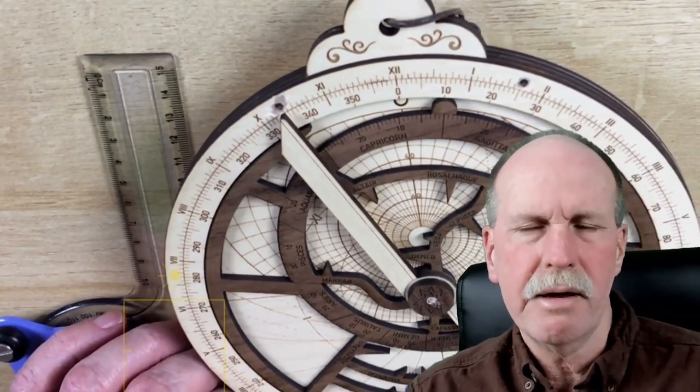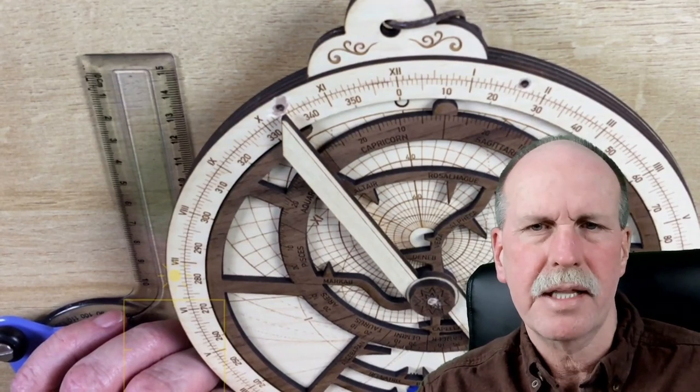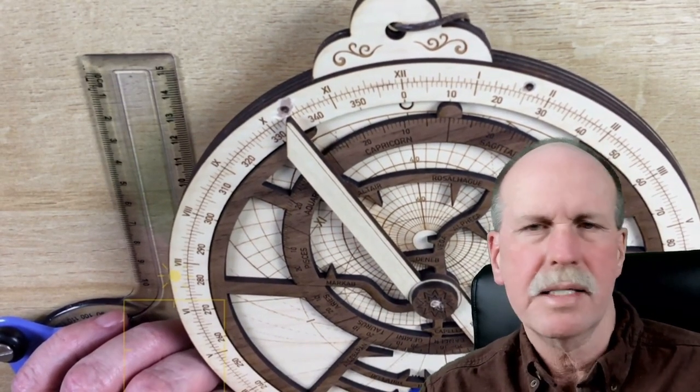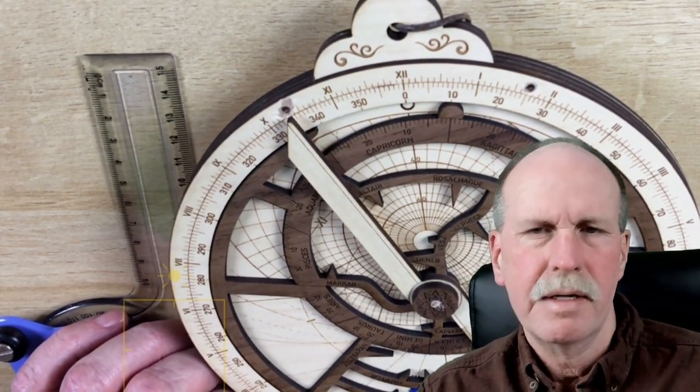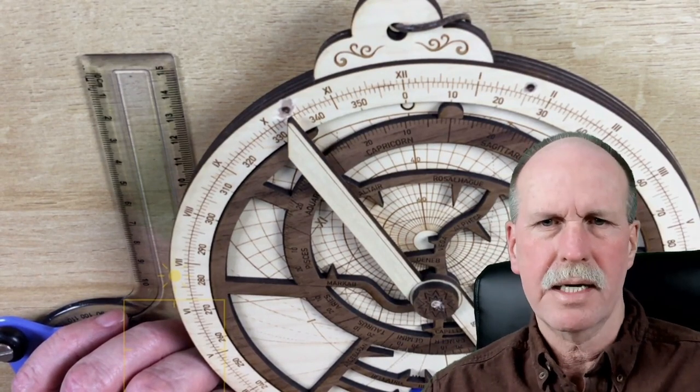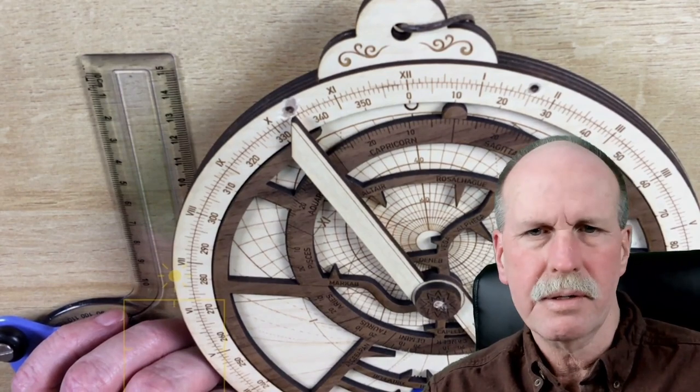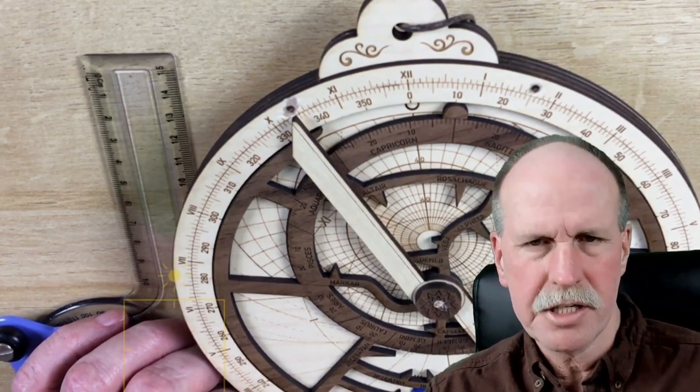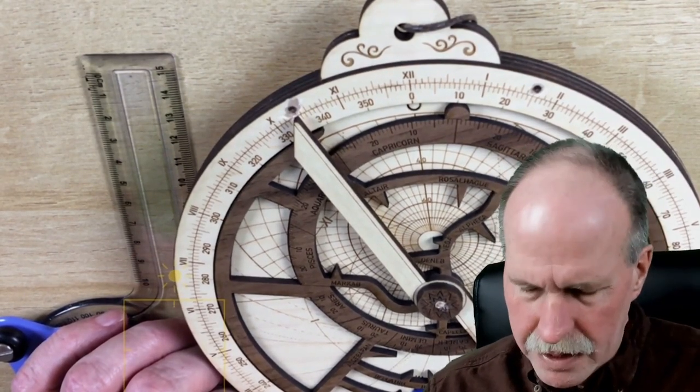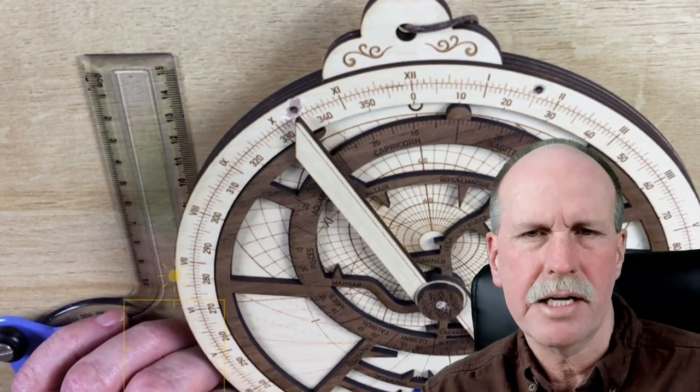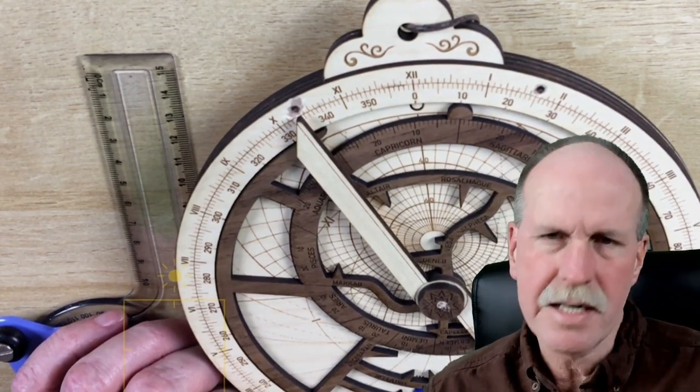Now as you'll recall when we calculated the time using the astrolabe earlier we got a time of 10:25 yet in reality the actual time was 11:15. Then we just went through the longitudinal correction and the equation of time to see why that is correct. Well now that we know how to tell time on the astrolabe let's see if we can find some times.